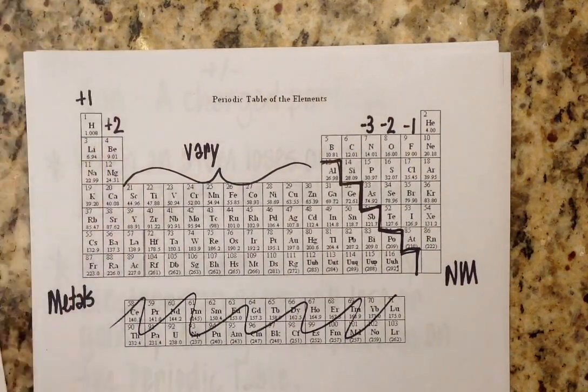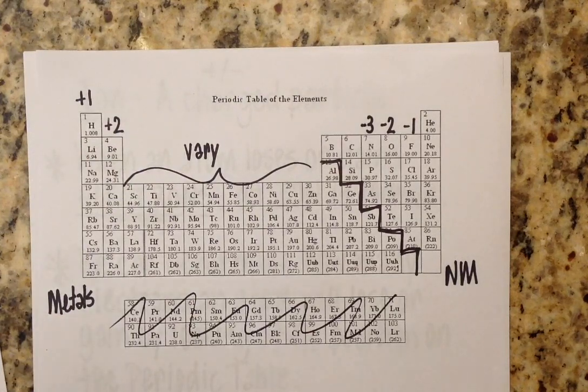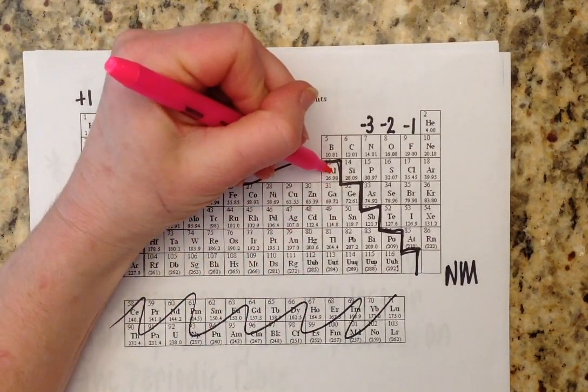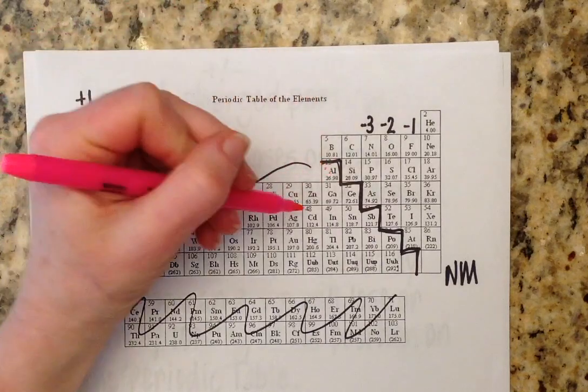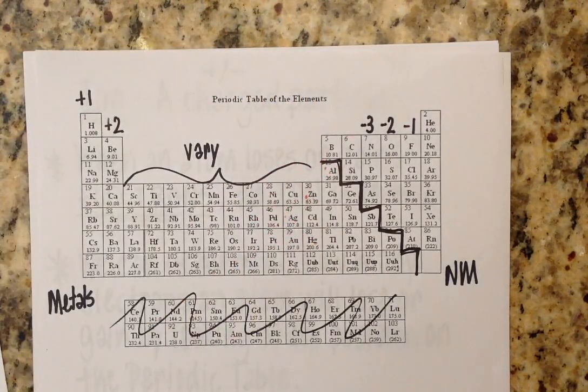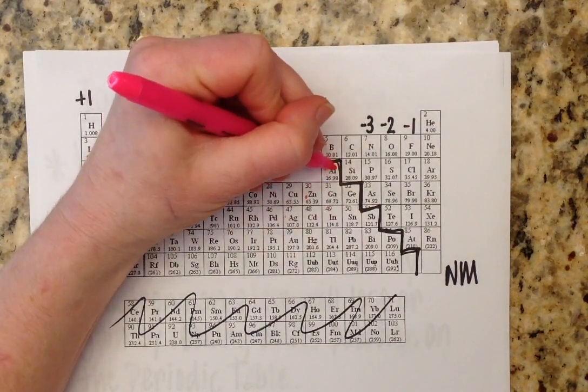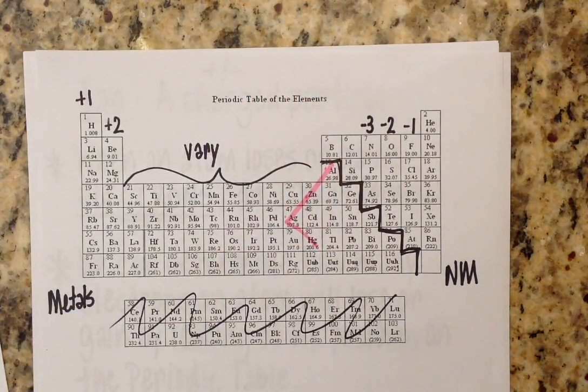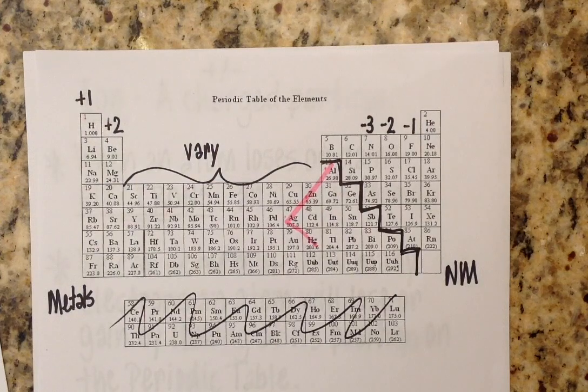Now there are four exceptions that are metals that you need to know because you see them all the time. And I'm going to mark them right here for you. Aluminum is always a plus three. Zinc is always a plus two. Silver and mercury are always a plus one. I just remember it this way: three, two, one, one. Those are your exceptions. And those are the only ones you have to know.